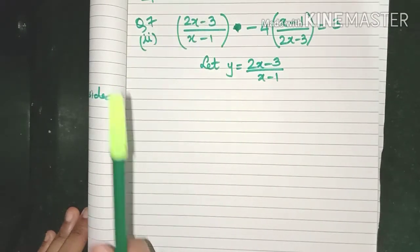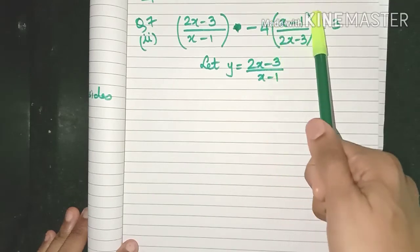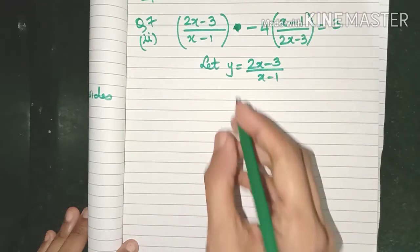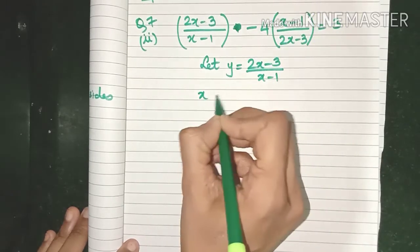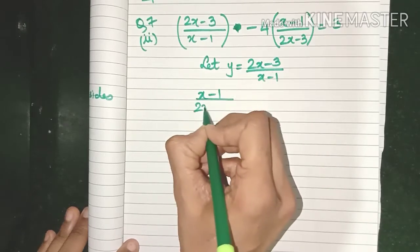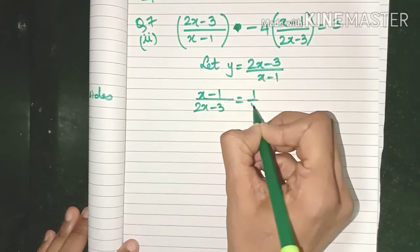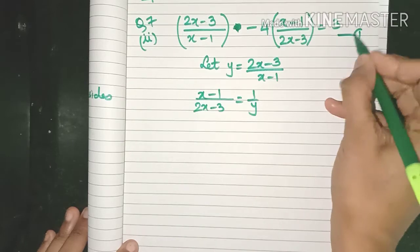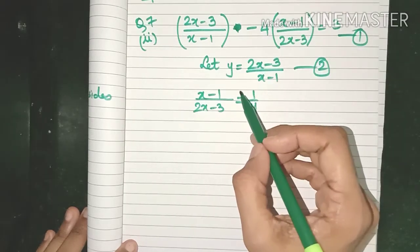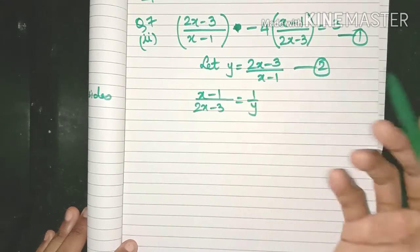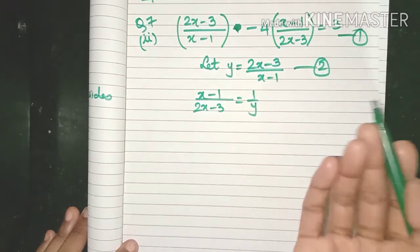Now what happens when this becomes y? We also have to express this in terms of y. So how we do is let us just cross multiply this particular equation. So I have got the value of (x - 1)/(2x - 3) also in terms of y.